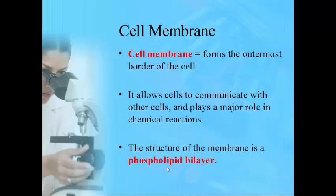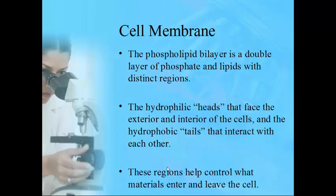The structure of the cell membrane is what's called a phospholipid bilayer. Hopefully you remember the term 'lipid' from chapter 2 — it's the same structure but with something added. The phospholipid bilayer is a double layer of lipids with a phosphate group attached. The glycerol head is hydrophilic — it loves water — and the fatty acid tails are hydrophobic — they don't like water.